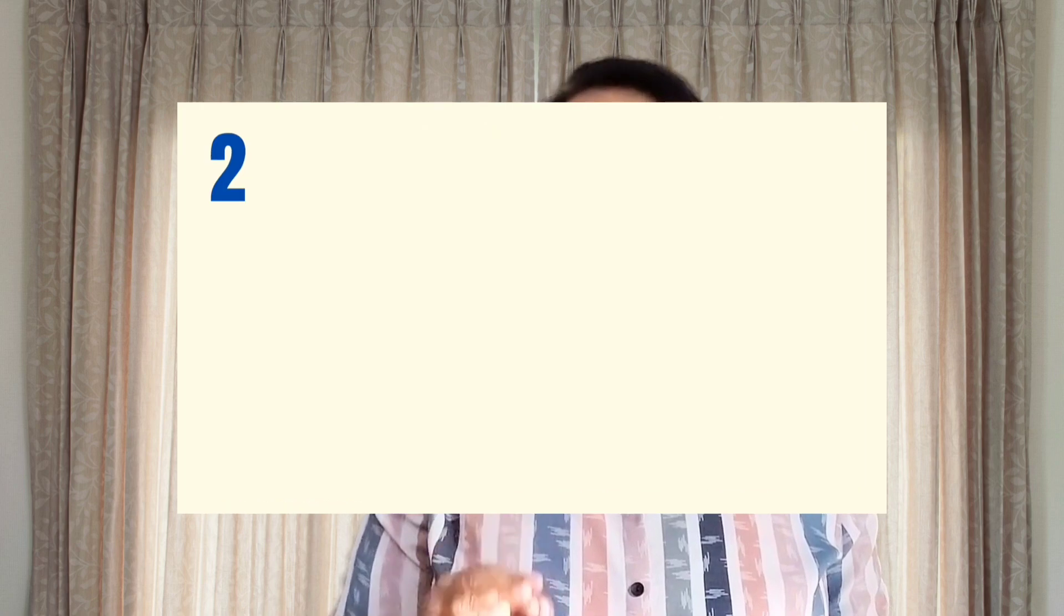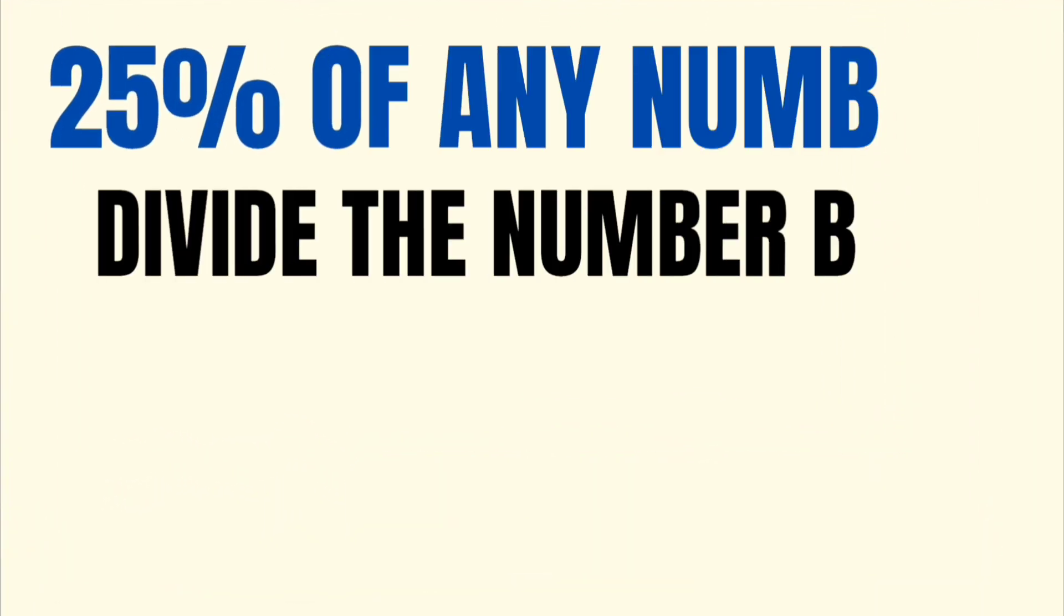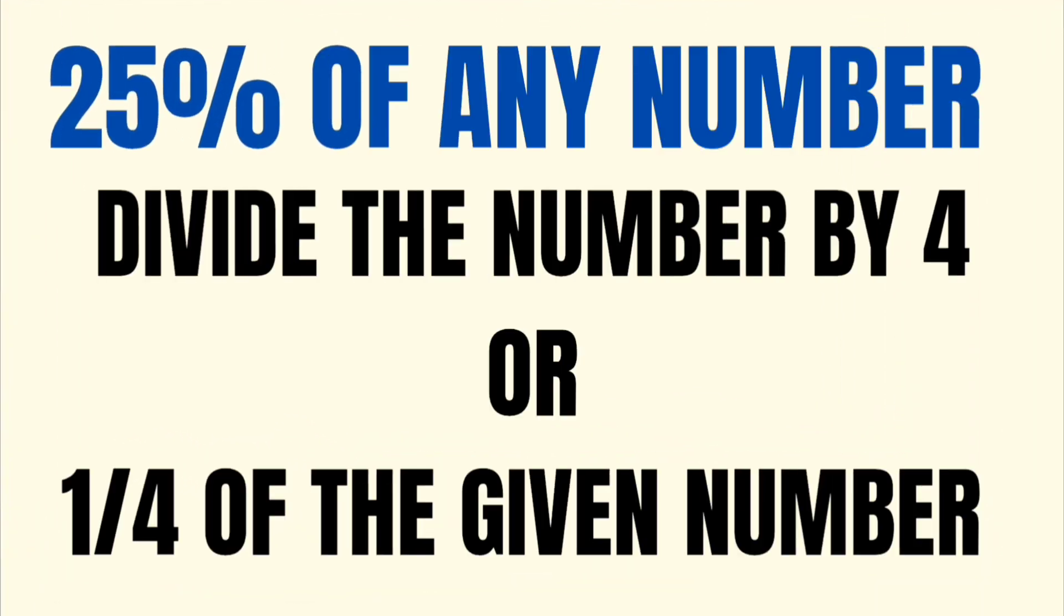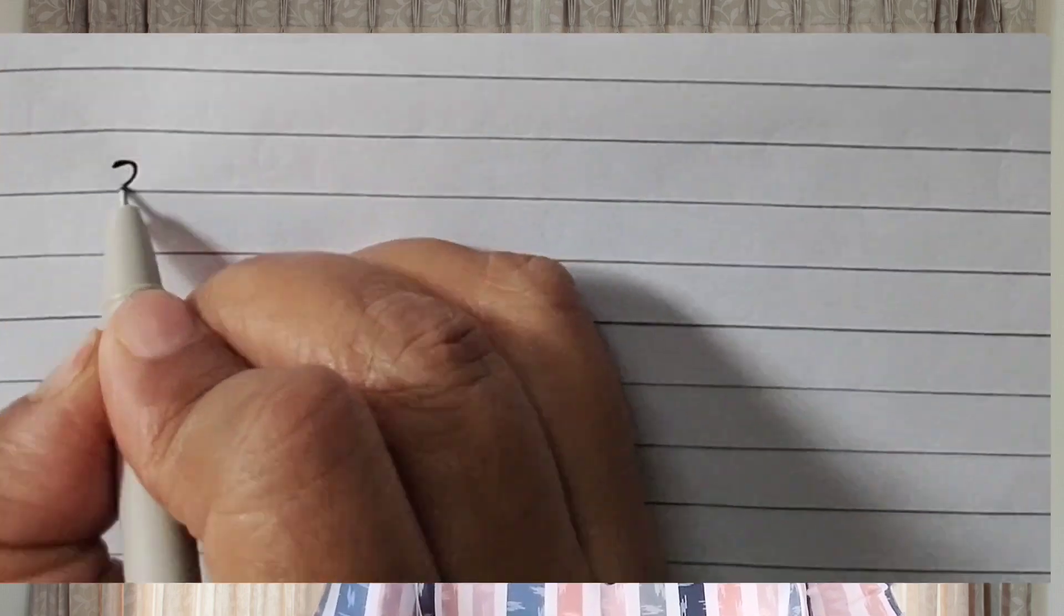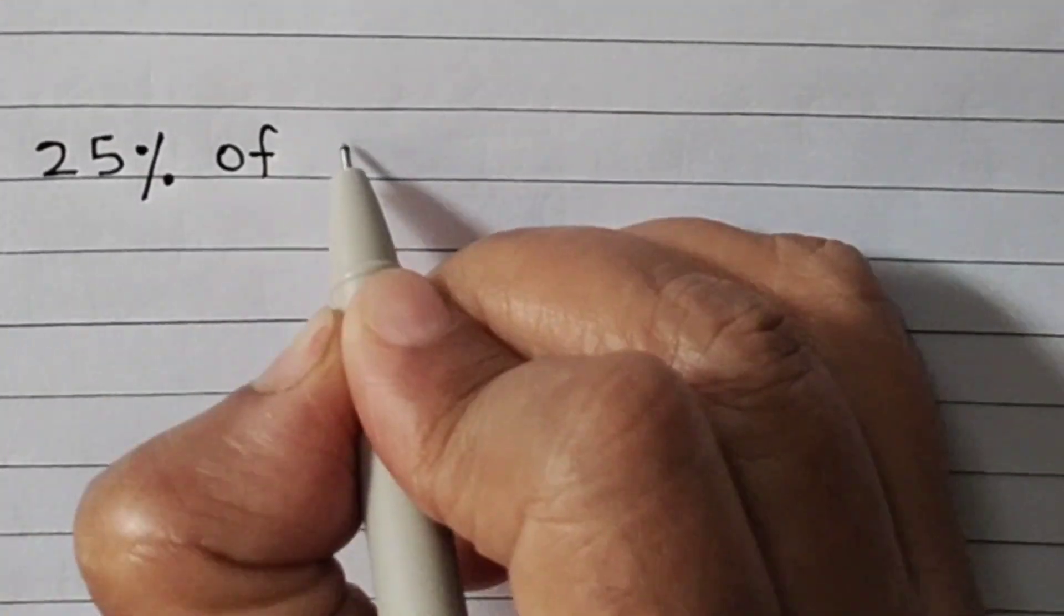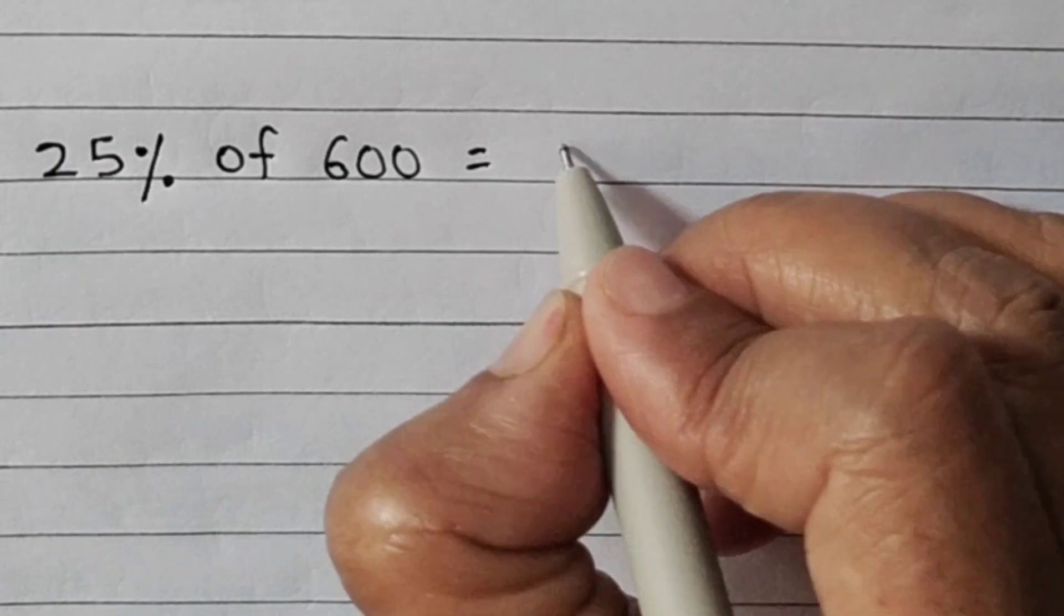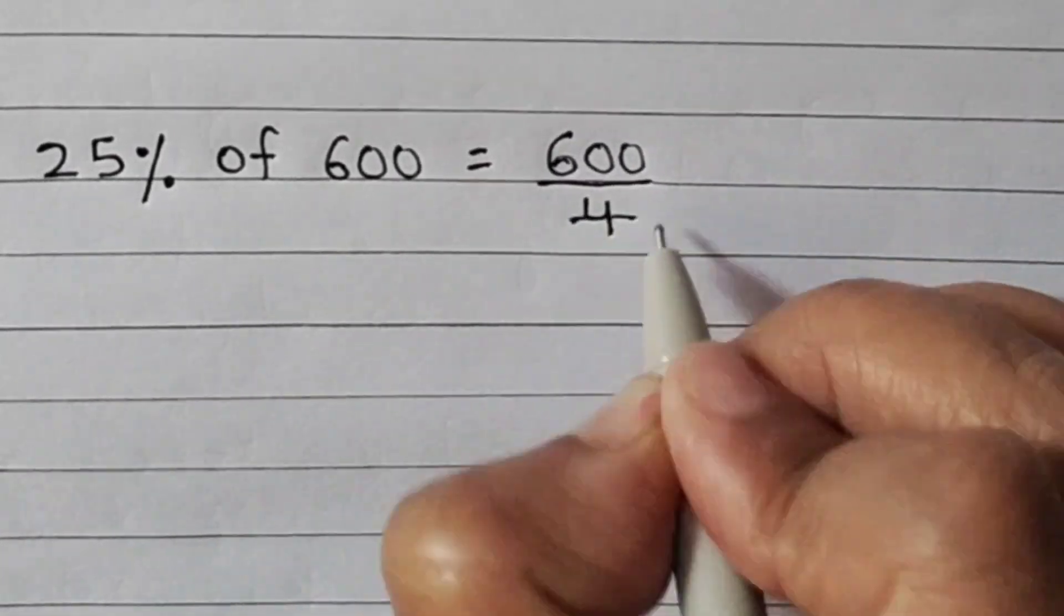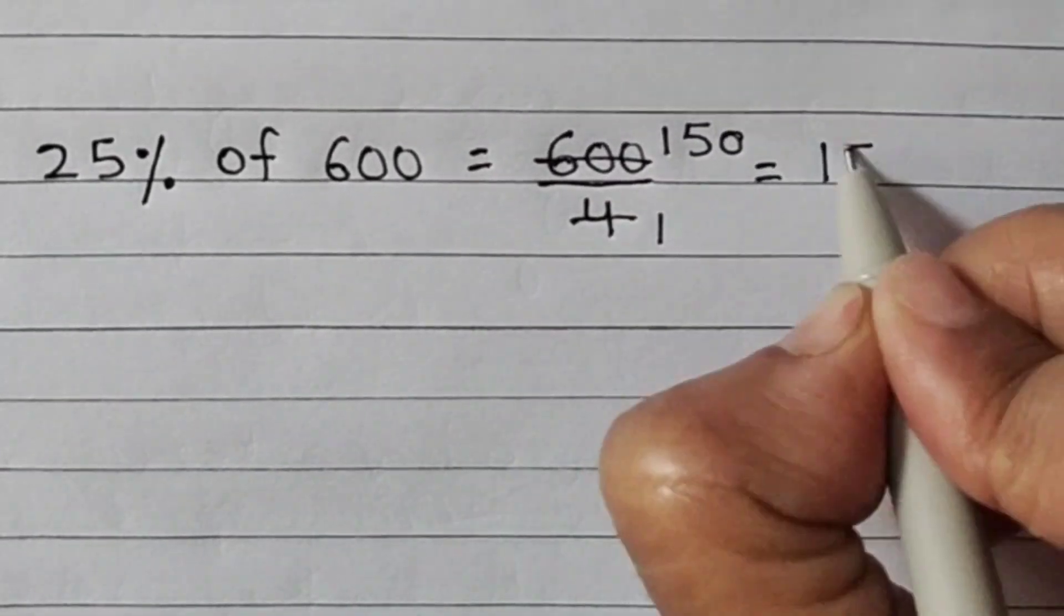Now we will learn to find 25% of any given number. To find 25% of any number, just divide that number by 4. That means one-fourth of that number is 25%. So 25% of 600 is 600 divided by 4 is equal to 150. So 25% of 600 is 150.